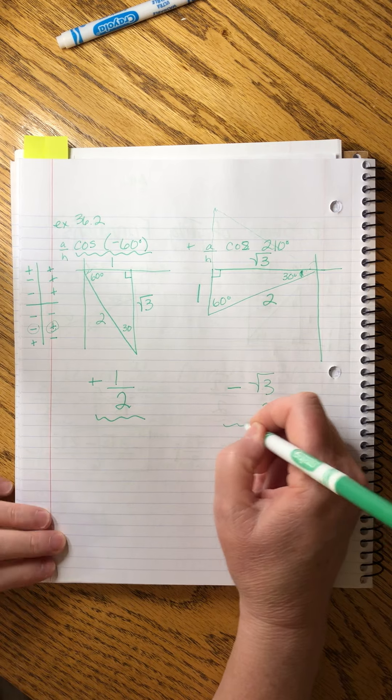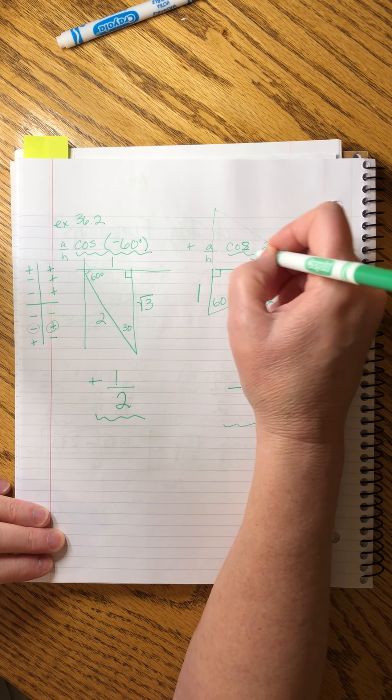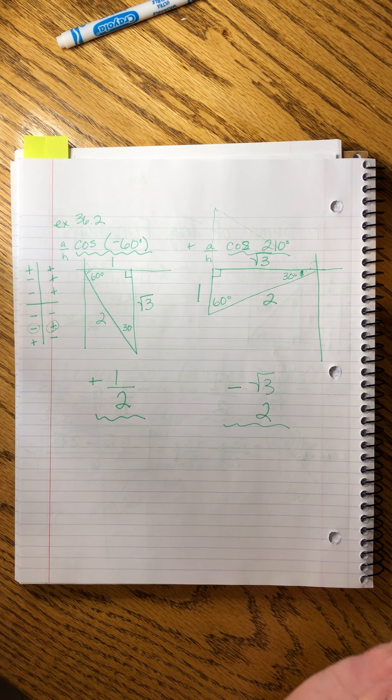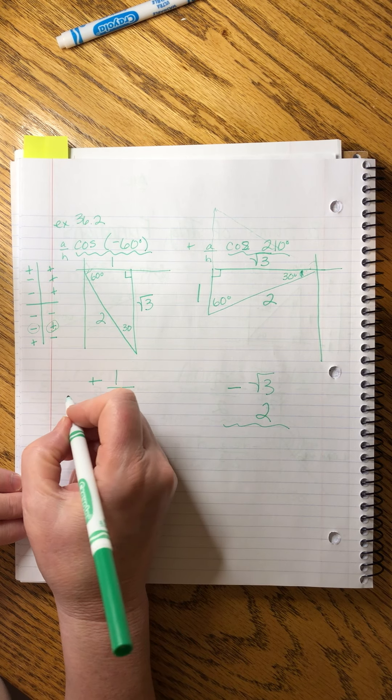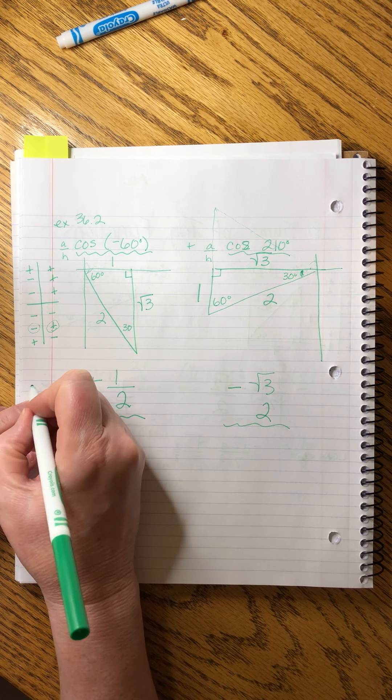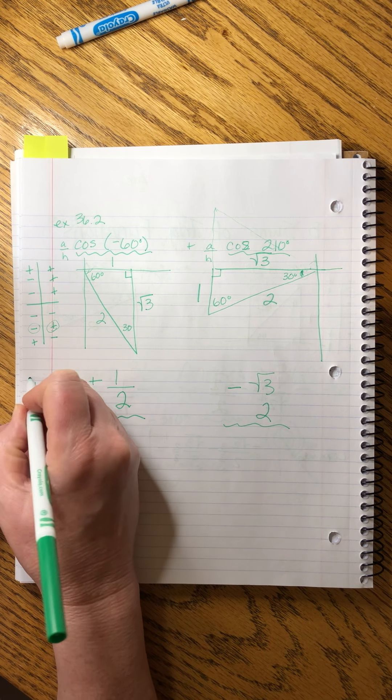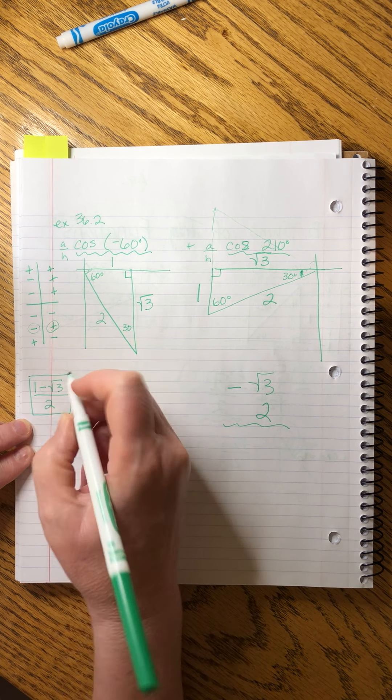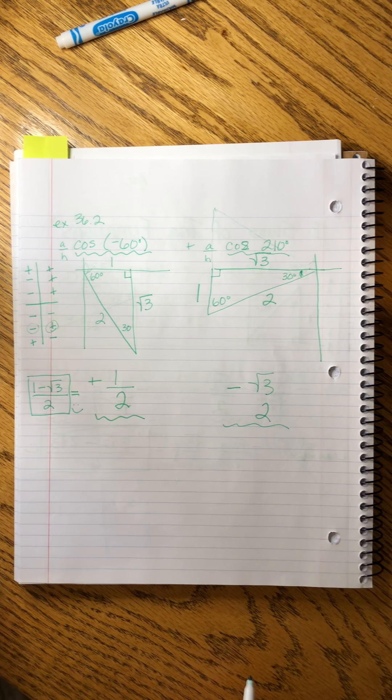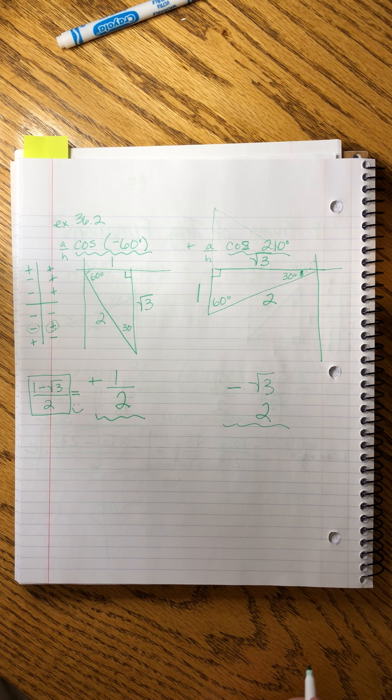Well, that looks pretty good. That's that. And all we have to do is mush them together. And I'm just going to write that over here. It's going to be one minus the square root of three all over two. That's our final answer.